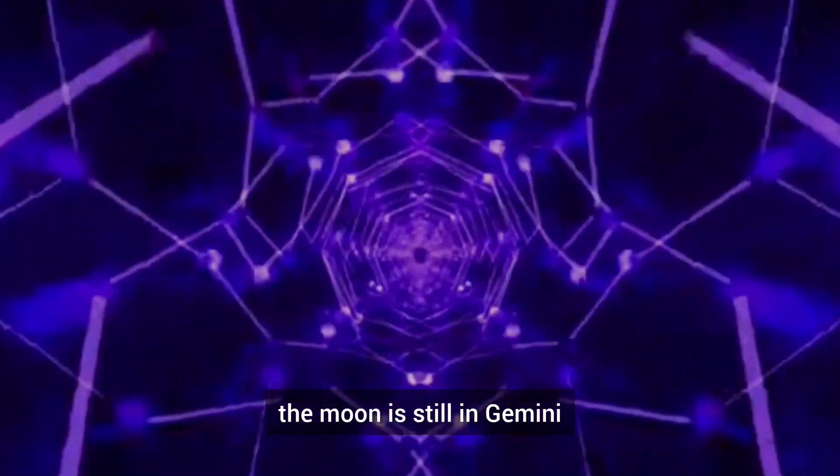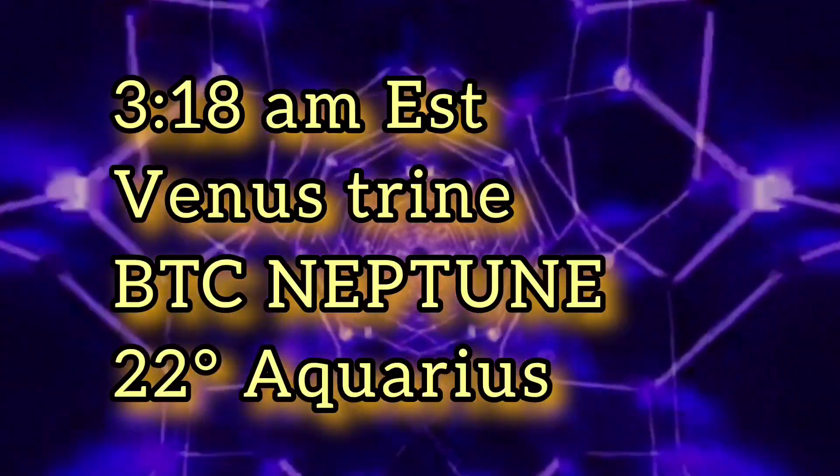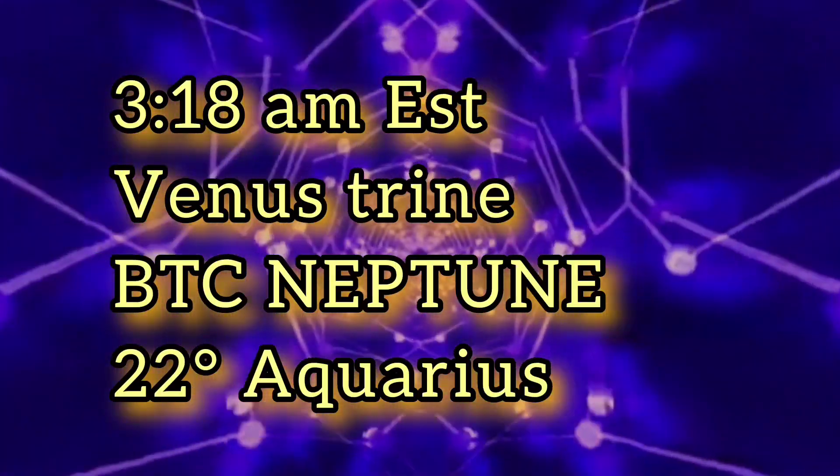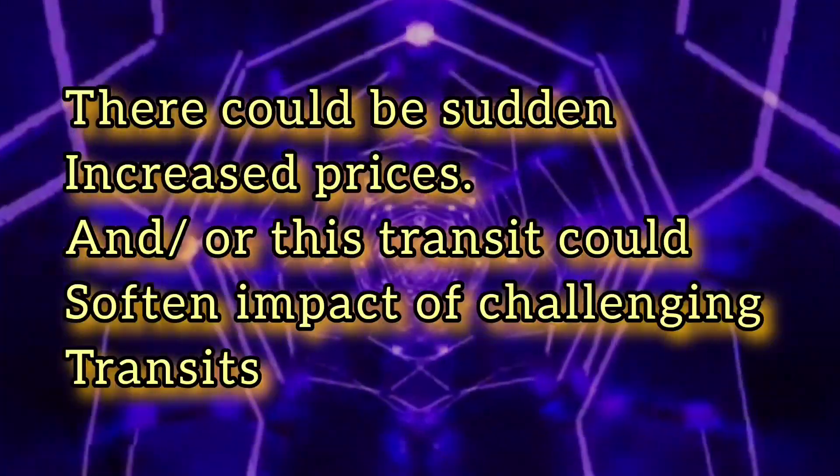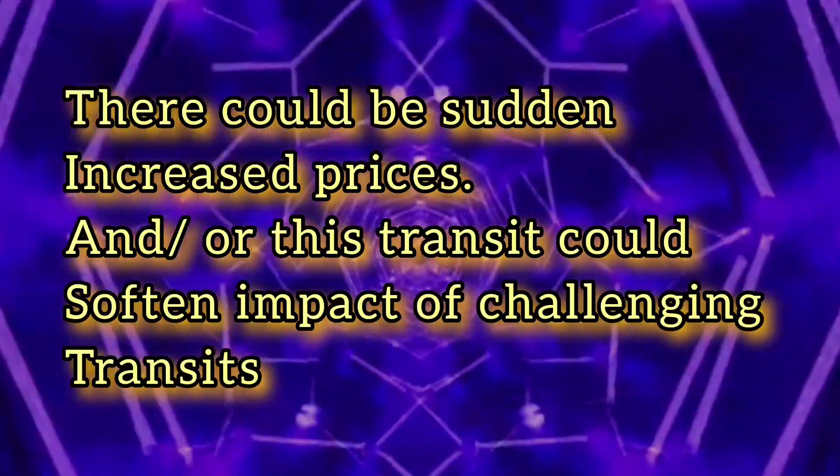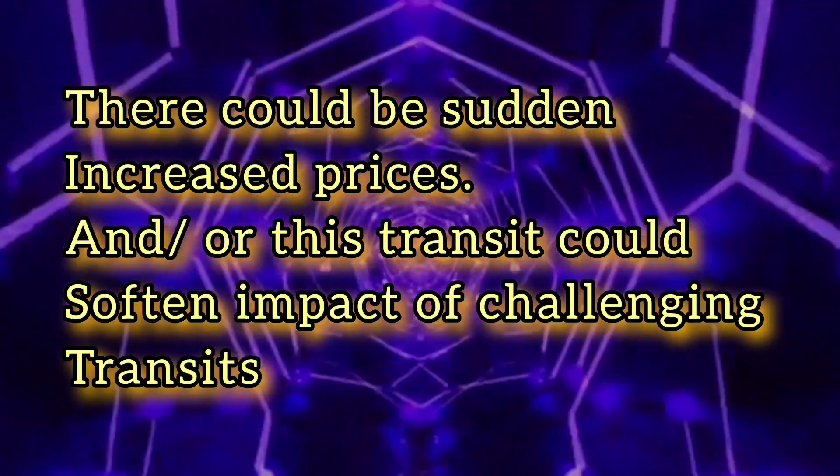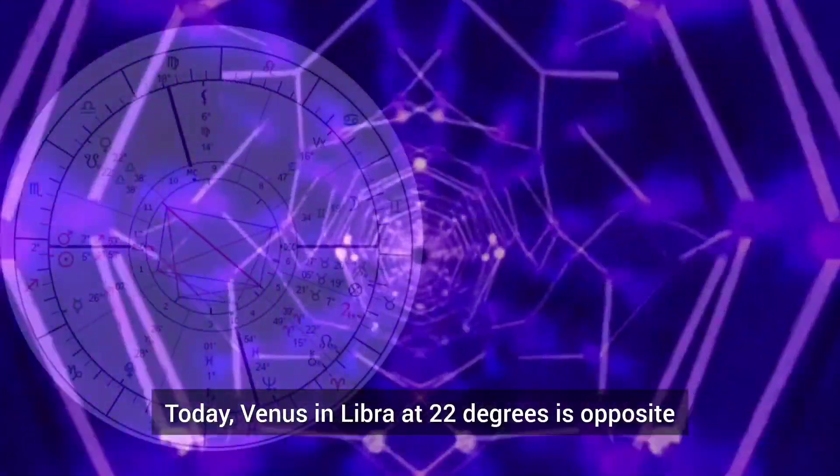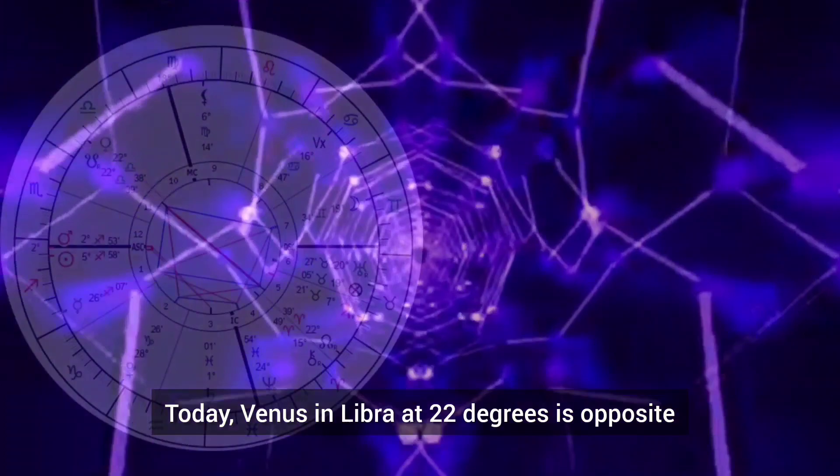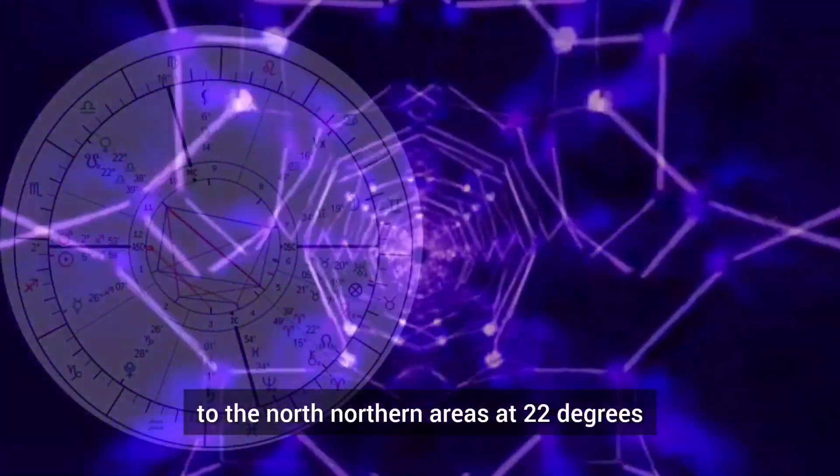Remember the 28th, the moon is still in Gemini. Today Venus in Libra at 22 degrees is opposite to the north node in Aries at 22 degrees.